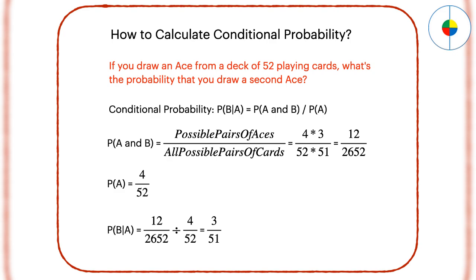Now, let's have an example. If you draw an ace from a deck of 52 playing cards, what's the probability that you draw a second ace? You know there are only 3 aces left in the remaining 51 playing cards, so the answer is 3 over 51. If you use the formula to calculate, it will also be 3 over 51.